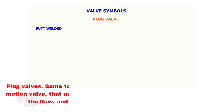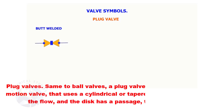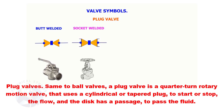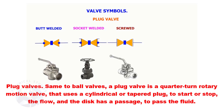Plug valves. Same as ball valves, a plug valve is a quarter turn rotary motion valve that uses a cylindrical or tapered plug to start or stop the flow. The disc has a passage to pass the flow and is in plug shape.